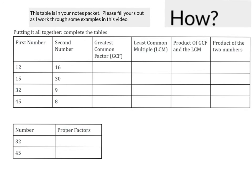There's a table in your notes packet — pause the video and find it. Let's look at the first two numbers together and figure out what goes in these boxes using the math we know. We're finding the greatest common factor of 12 and 16.